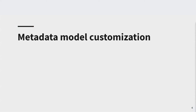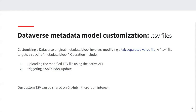There are a number of domain-specific metadata blocks, such as Geospatial, Life Sciences, and Astronomy. In our case, we activated the Social Sciences metadata section that contains multiple DDI fields. Customizing Dataverse's original metadata blocks involves modifying a tab-separated value (TSV) file. With a TSV file, you can add, change, or remove fields — for example, add controlled vocabularies, change the name, description, display order, and so on. A TSV file targets specific metadata blocks.